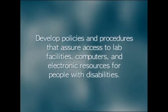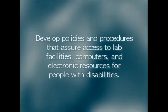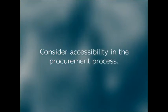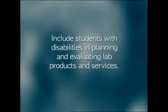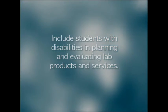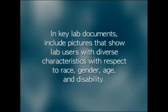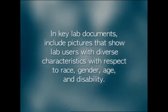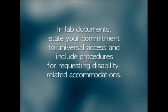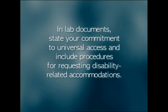With those key issues in mind, you'll be able to make your lab accessible to everyone. To get started: develop policies and procedures that assure access to lab facilities, computers, and electronic resources for people with disabilities. Consider accessibility in the procurement process. Include students with disabilities in planning and evaluating lab products and services. In key lab documents, include pictures that show lab users with diverse characteristics with respect to race, gender, age, and disability. Also in lab documents, state your commitment to universal access and include procedures for requesting disability-related accommodations.